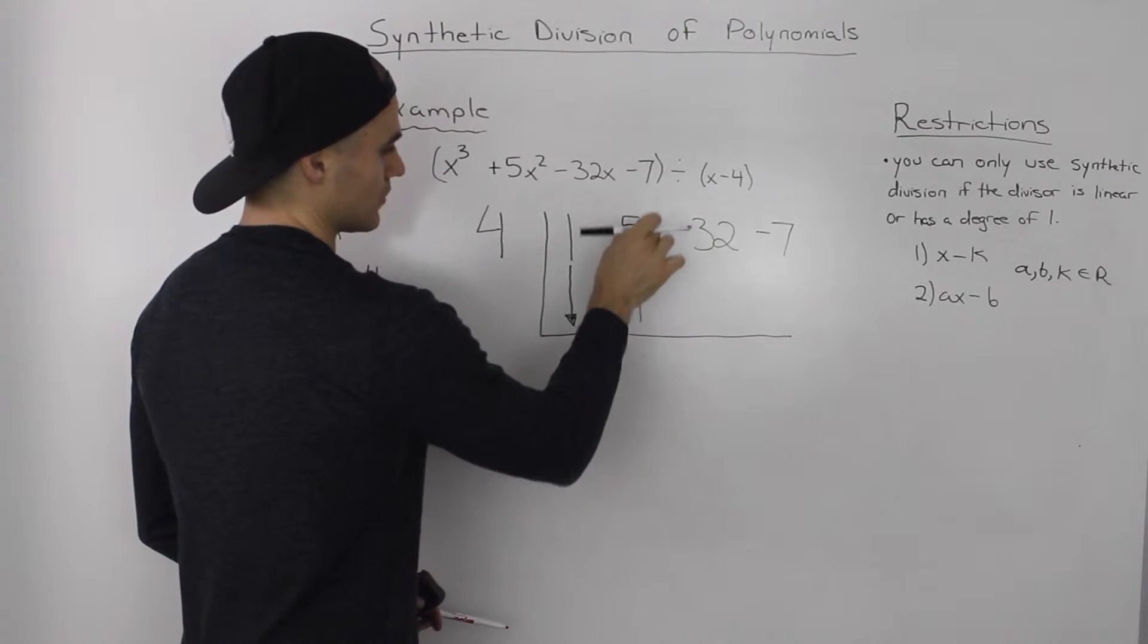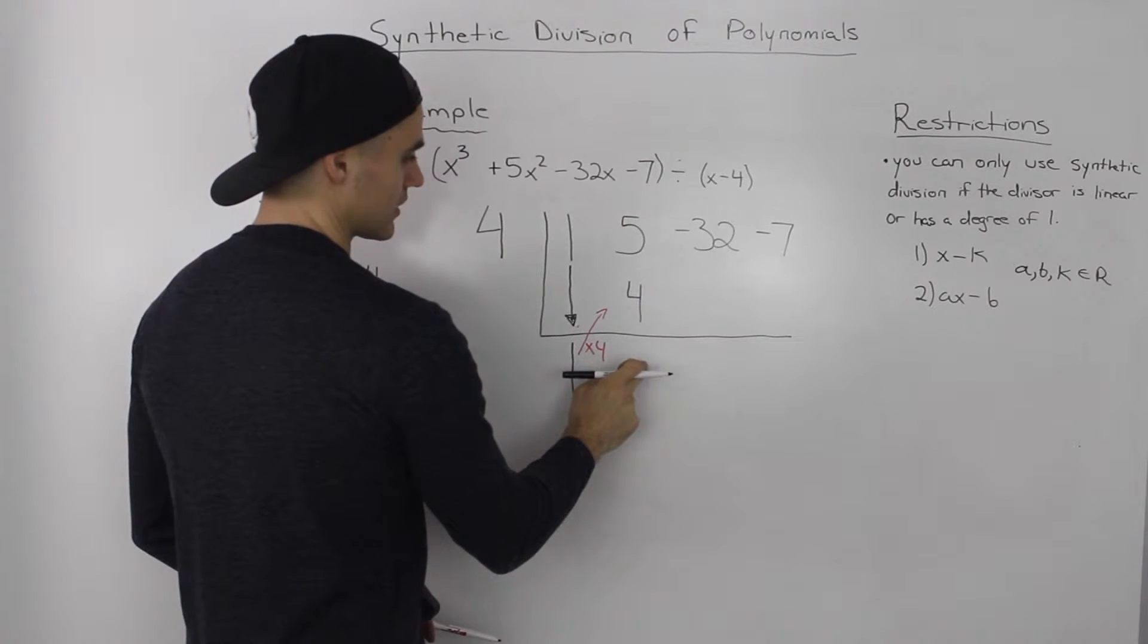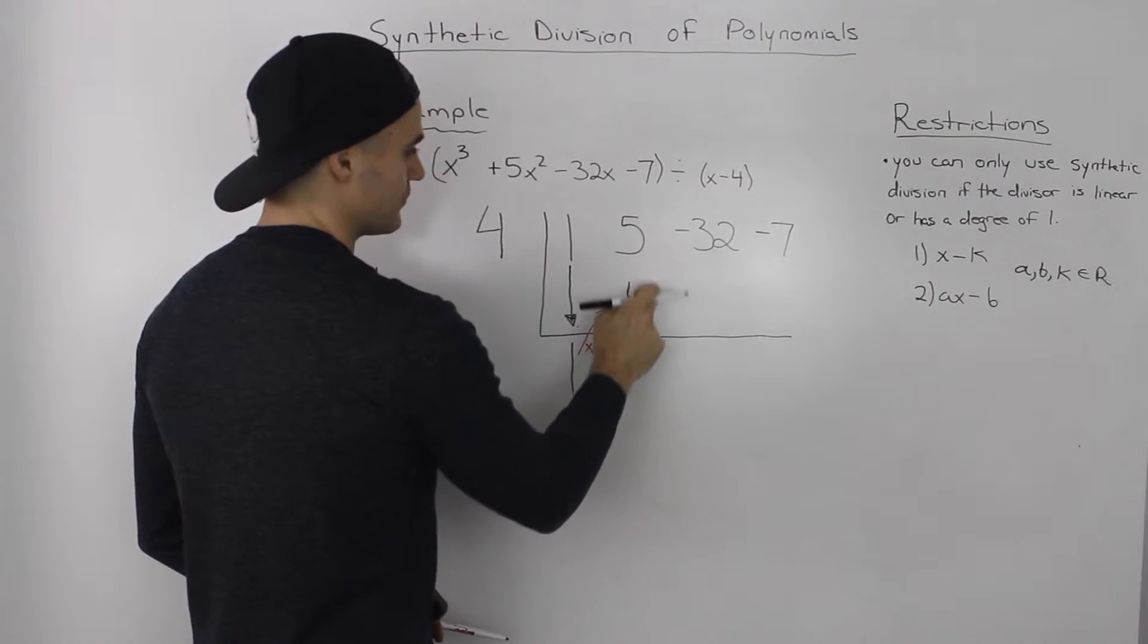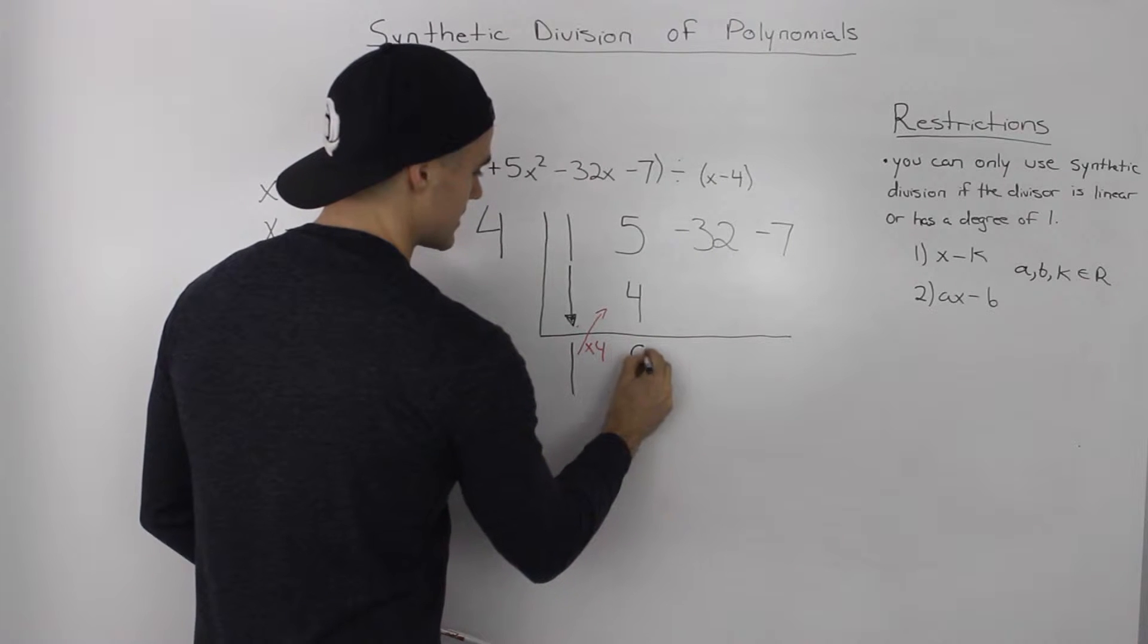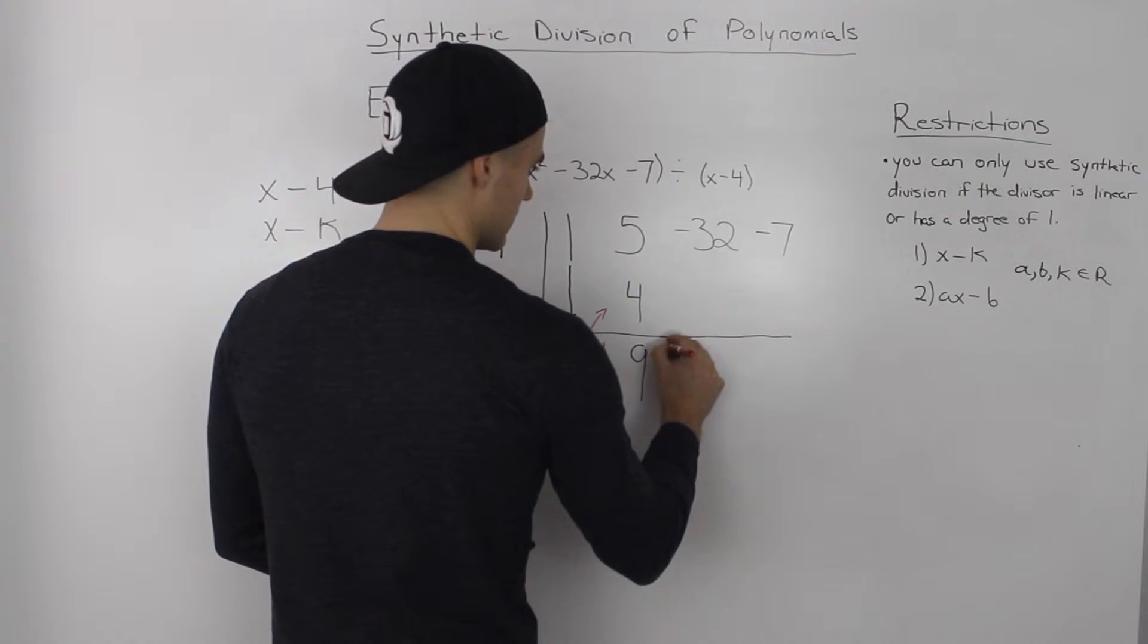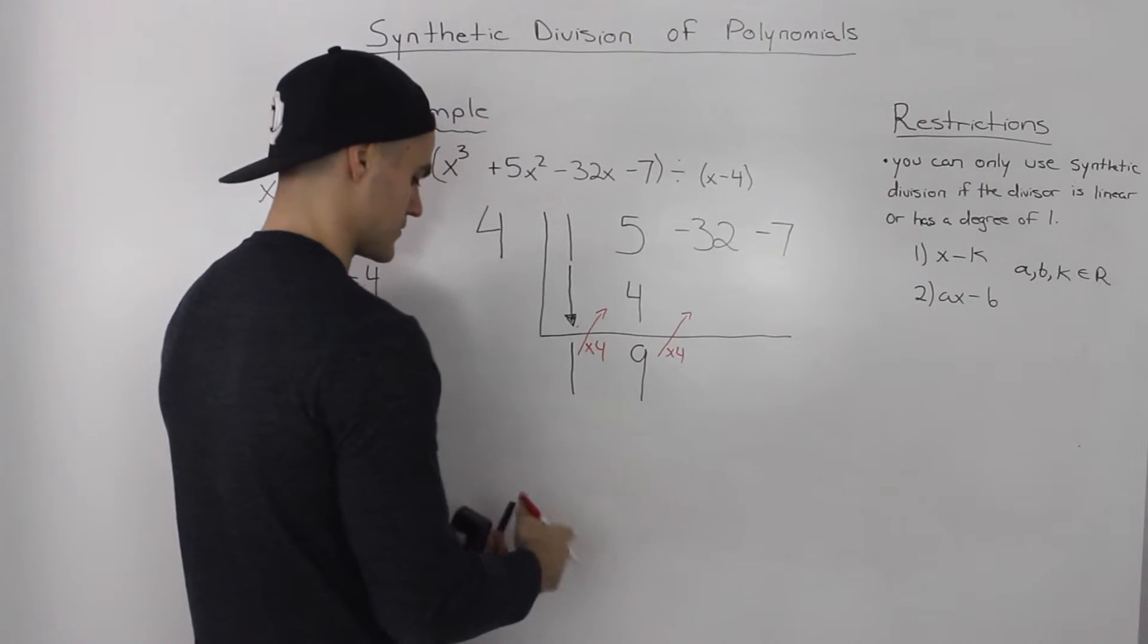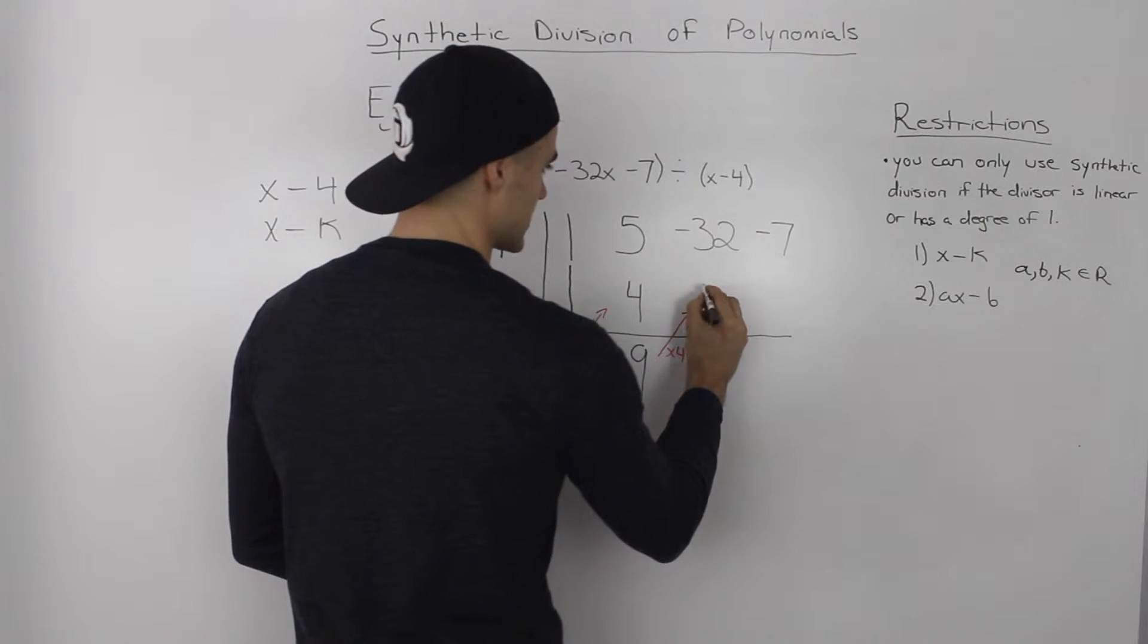And then what you do is you add these two numbers to get this number under here, so 5 plus 4 is 9. And then same thing, you take this 9, multiply it by the K value of 4. So then 9 times 4 is 36.